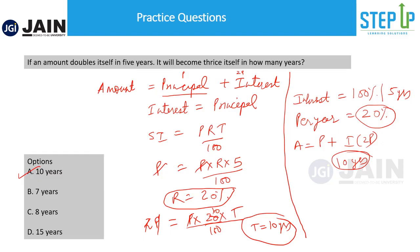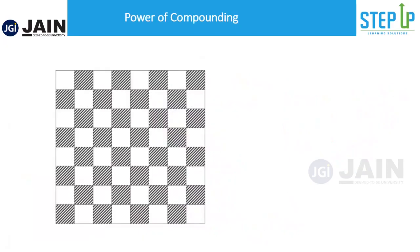Now we understand simple interest. Let's understand how compound interest differs. I want to help you understand this with the help of a story. Long time ago, there was a king who was one day playing chess. While the king was playing chess, there was also a prisoner, and the prisoner came to the king and asked for a request — he said, I have a final wish before I die.